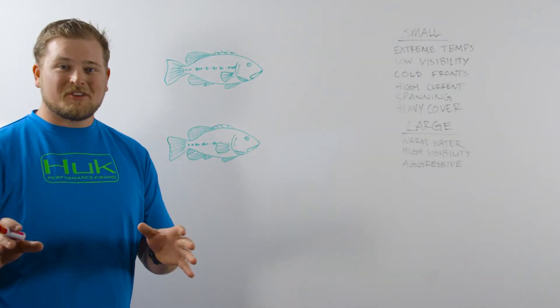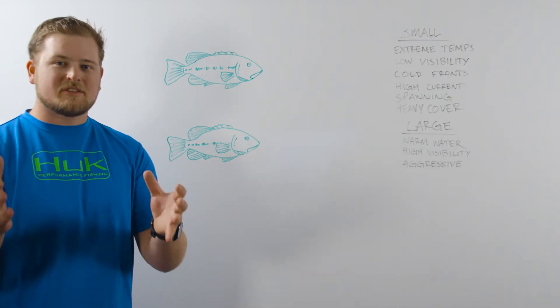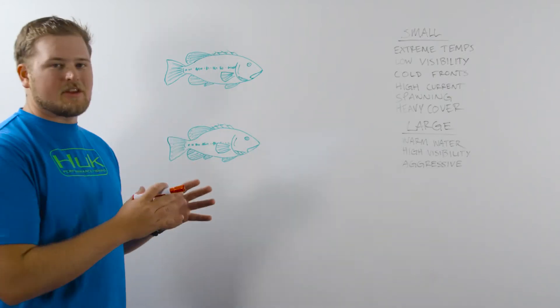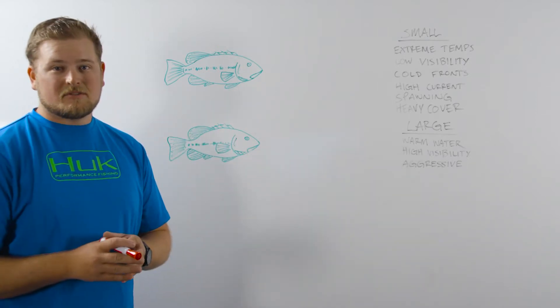All right, so let's talk about strike zones. A fish's strike zone is the distance that they're willing to move to attack a bait, and there's a lot of different conditions that decide what size the strike zone is going to be.